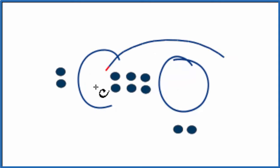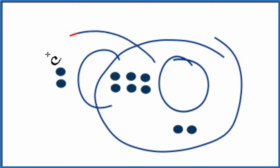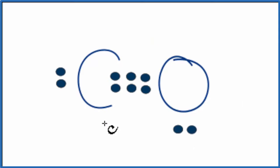So now we have eight still for the oxygen, but the carbon, it has eight. So this triple bond, we fulfill the octet for both the oxygen and the carbon.